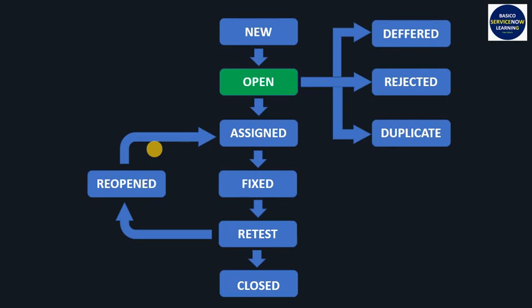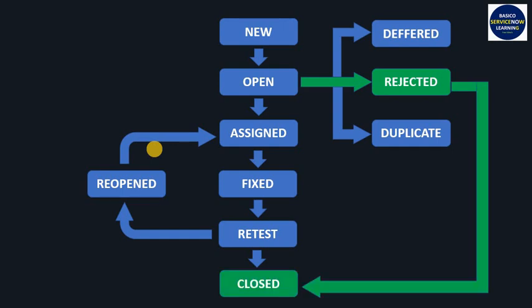In the bug lifecycle, if the bug is in Open state and after discussion the development team finds the bug is not genuine, they mark the state as Rejected and then close the particular bug. This is the cycle of how a bug gets rejected in a bug tracking tool.